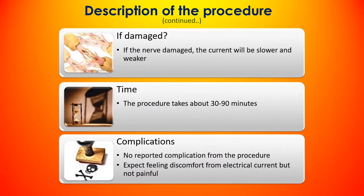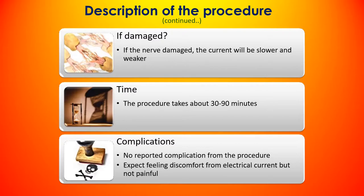If the nerves are damaged or if there is demyelination, the waveform shown on the monitor will be slower — the latency will be greater and the amplitude of the waveform will be lower. The whole procedure takes about 30 to 90 minutes, and there are no significant complications except discomfort from the electric shocks during stimulation. This should be mentioned to the patient prior to performing the test so that the patient feels comfortable and does not have any problem.